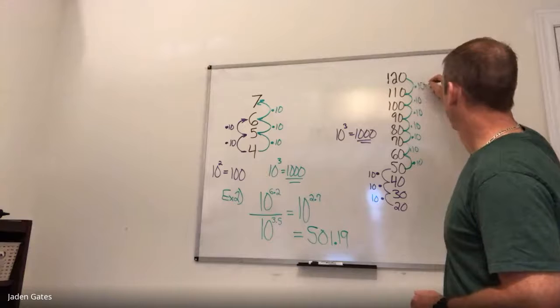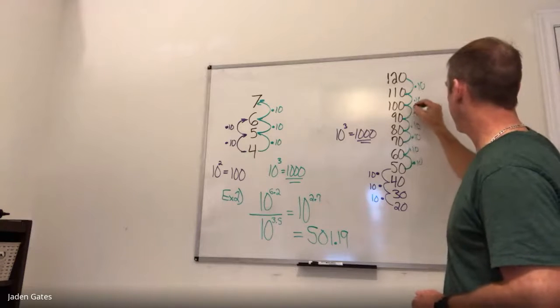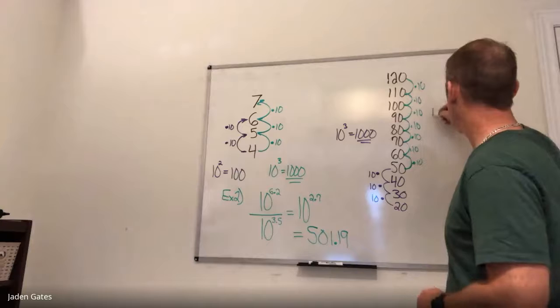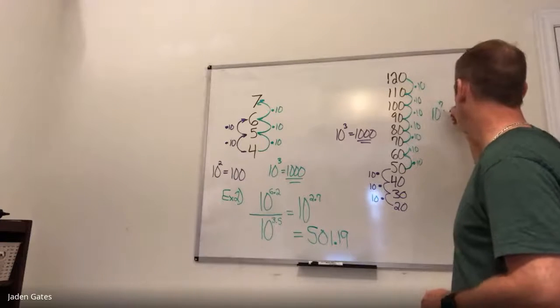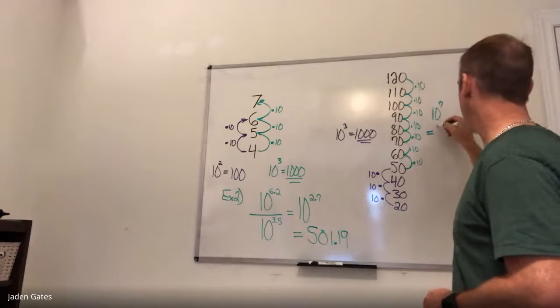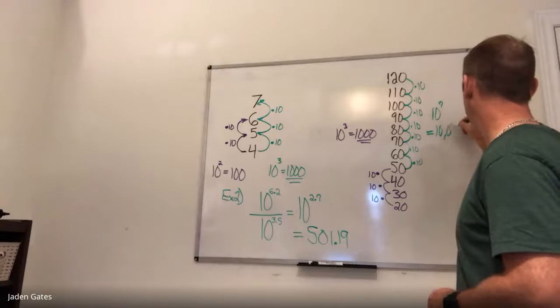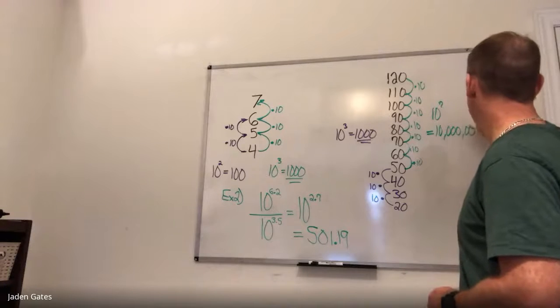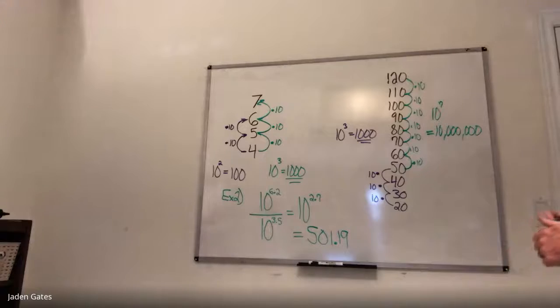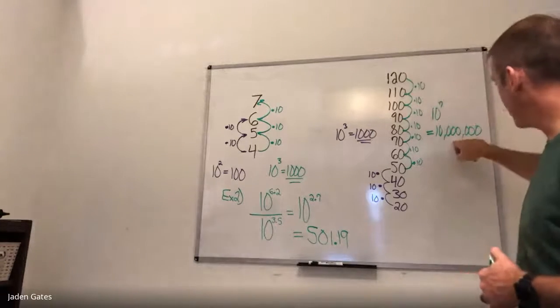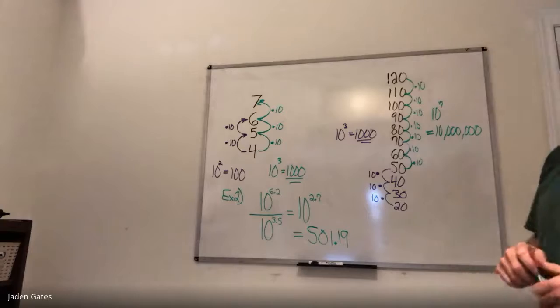And again, I believe I said seven, one, two, three, four, five, six, seven, 10 to the power of seven, which is seven zeros. I believe that is 10 million times louder. So 120 is 10 million times louder than a 50.